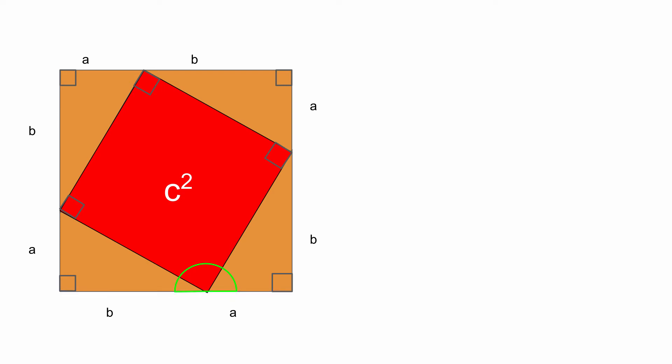Now, since we know that, we can start deriving c squared in terms of a and b. Now, we calculate c squared in terms of a and b by basically saying that c squared is the whole figure minus 4 times the area of the triangles.